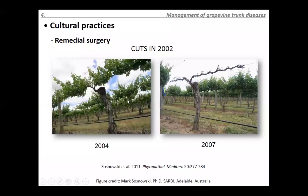Interesting work from Australia by colleague Marcel Zanoski examined where to cut when performing remedial surgery — at the top, middle, or bottom of the vine. In a trial where vines were cut in 2002 at different heights, by 2004 (two years after cutting) vines were still producing, but by 2007 (five years after cutting) some were completely dead, illustrating that where you make the cut matters for long-term success.